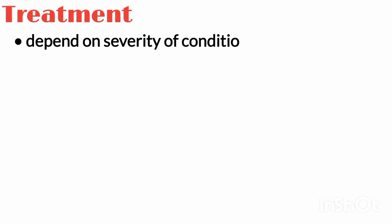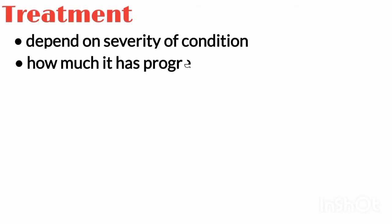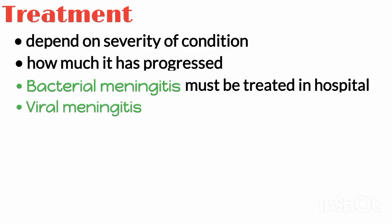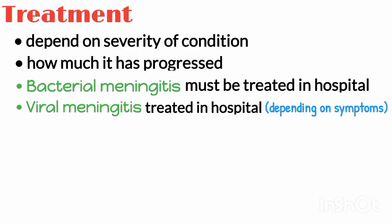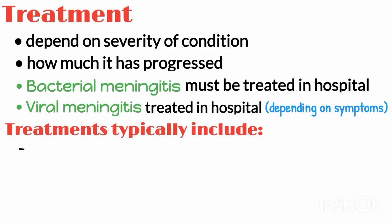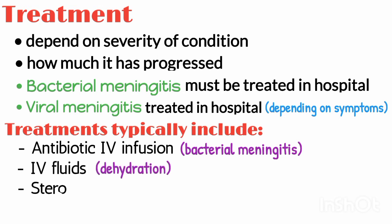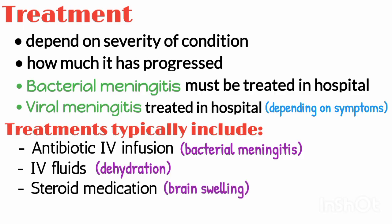Treatments for encephalitis and meningitis depend on the severity of your condition and how much it has progressed. All bacterial meningitis must be treated in the hospital. Viral meningitis may also be treated in the hospital depending on your symptoms. Treatments typically include an antibiotic IV infusion to treat bacterial meningitis, IV fluids to prevent dehydration, and steroid medication to prevent brain swelling.